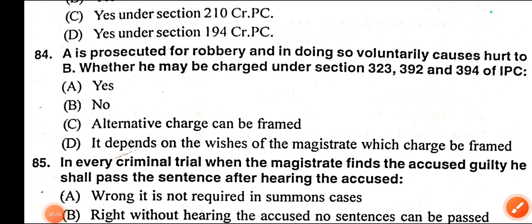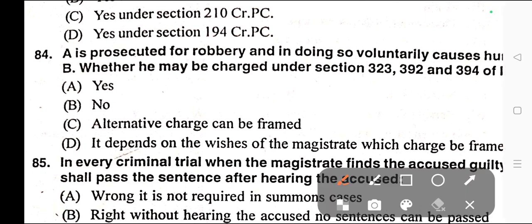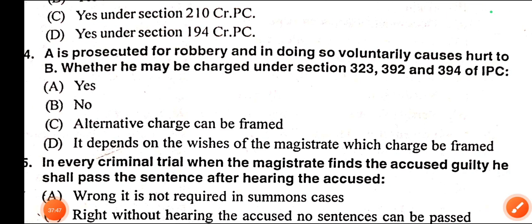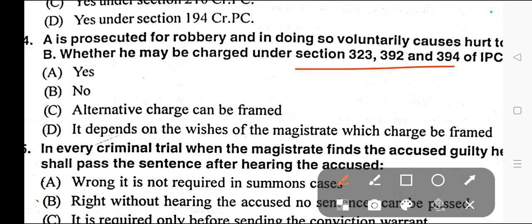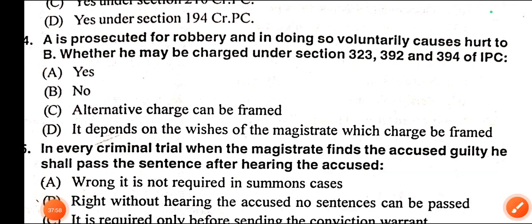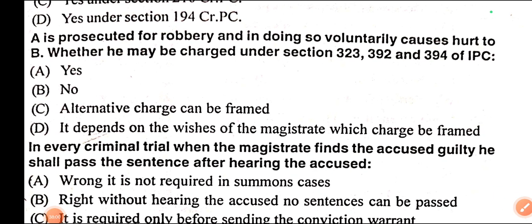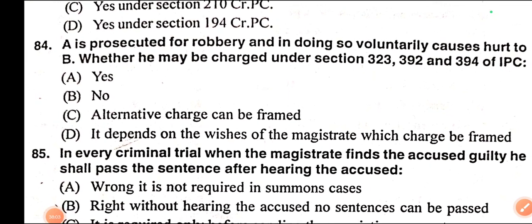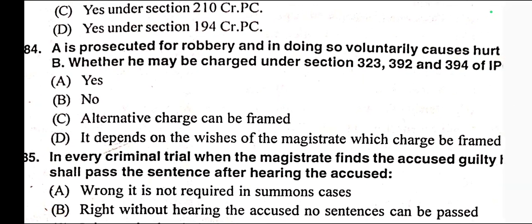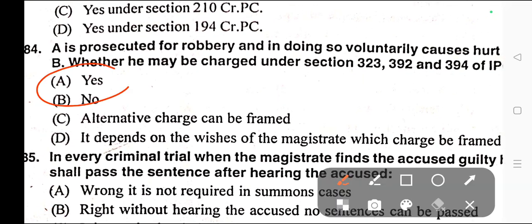Question number eighty-four: A is prosecuted for robbery and in doing so voluntarily causes hurt to B. Whether he may be charged under Sections 323, 392, and 394 of IPC. Options: A) Yes, B) No, C) Alternative charge can be framed, D) It depends on the wishes of the magistrate. Correct answer is option A — Yes.